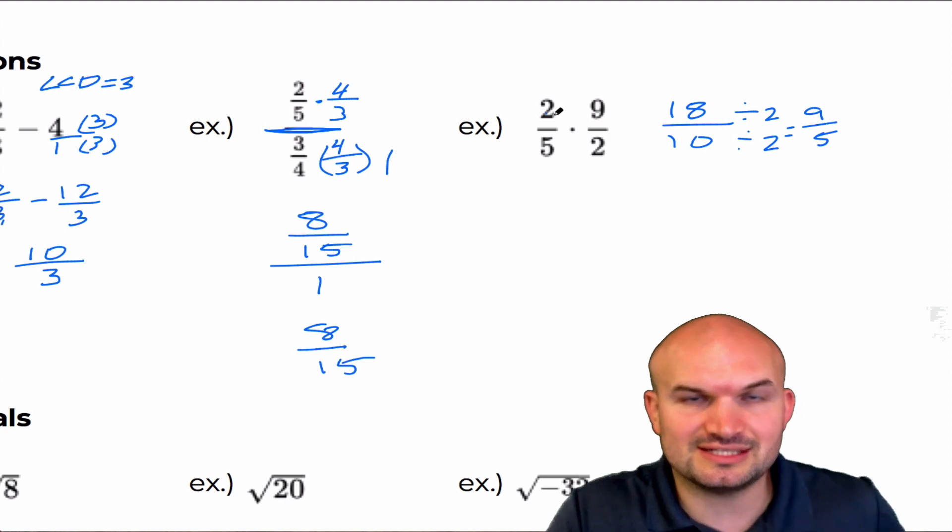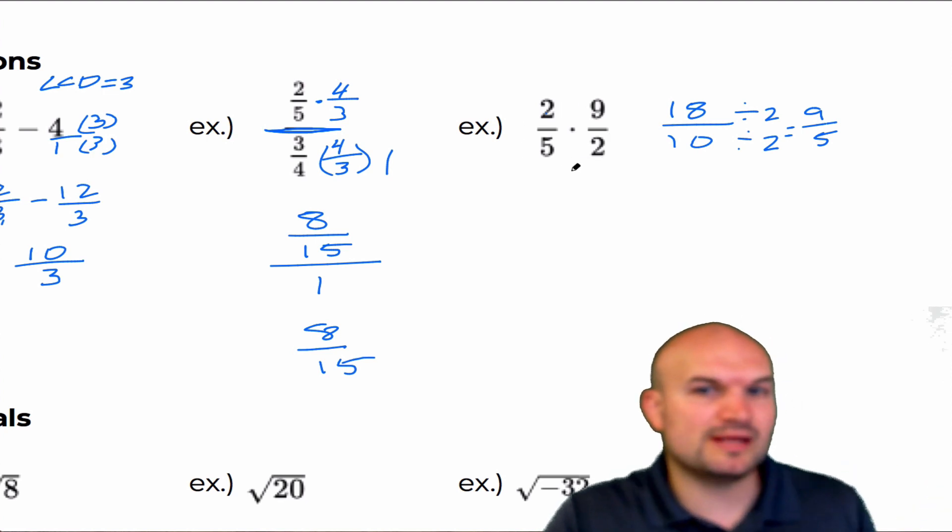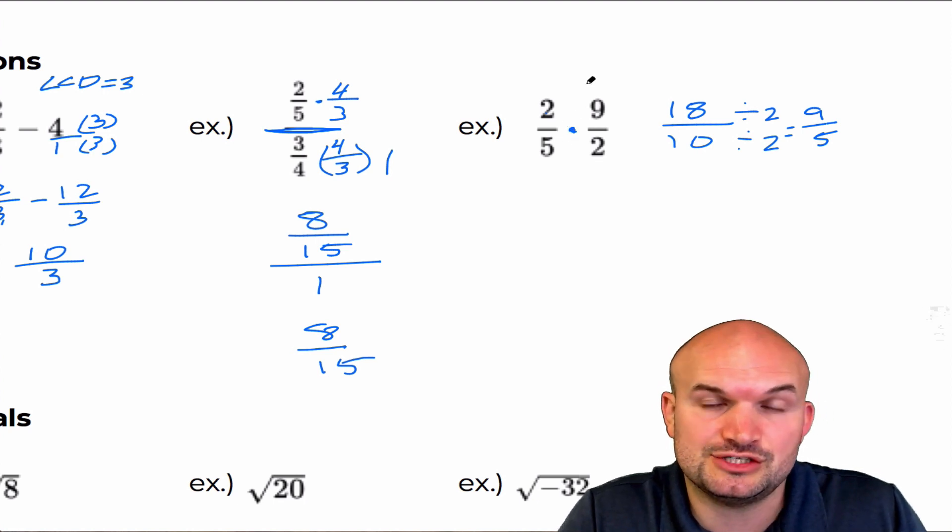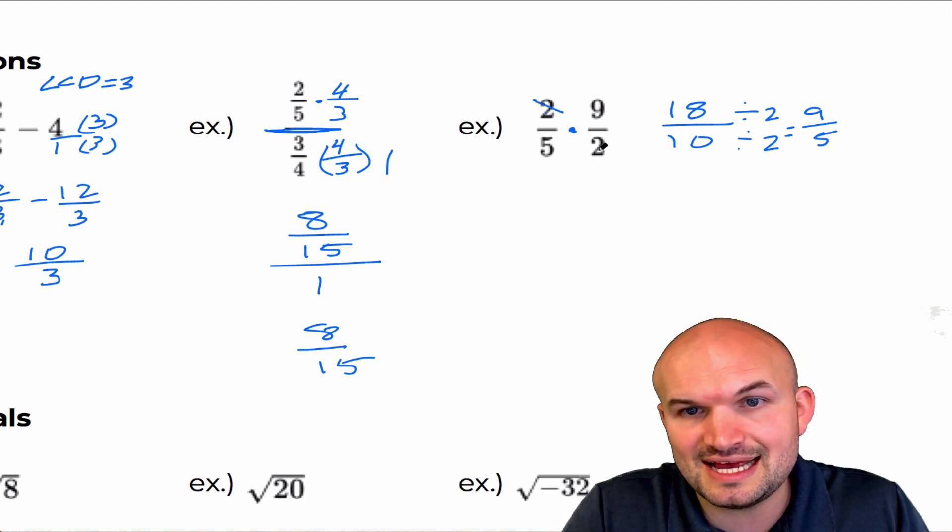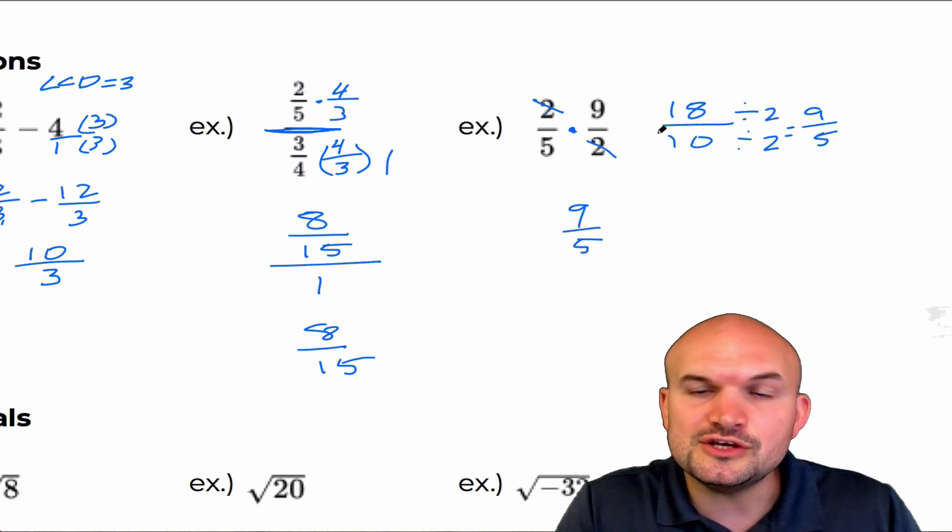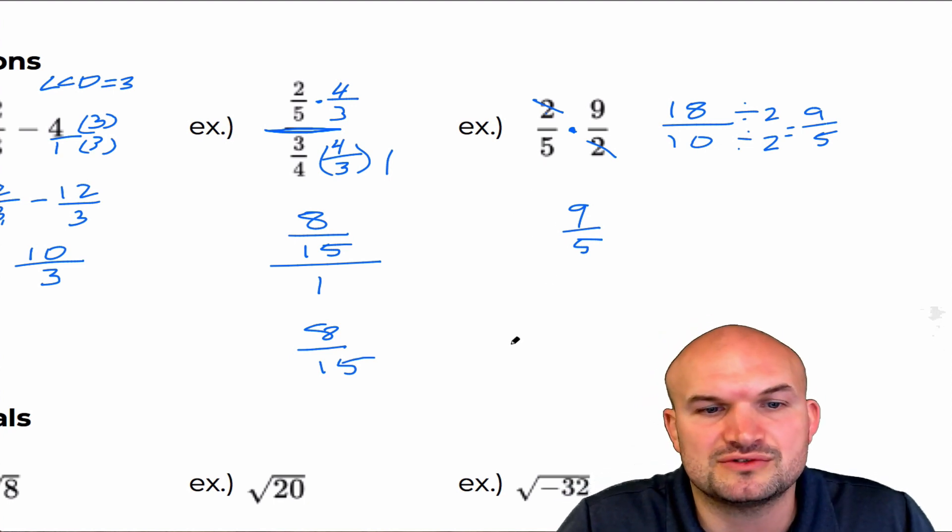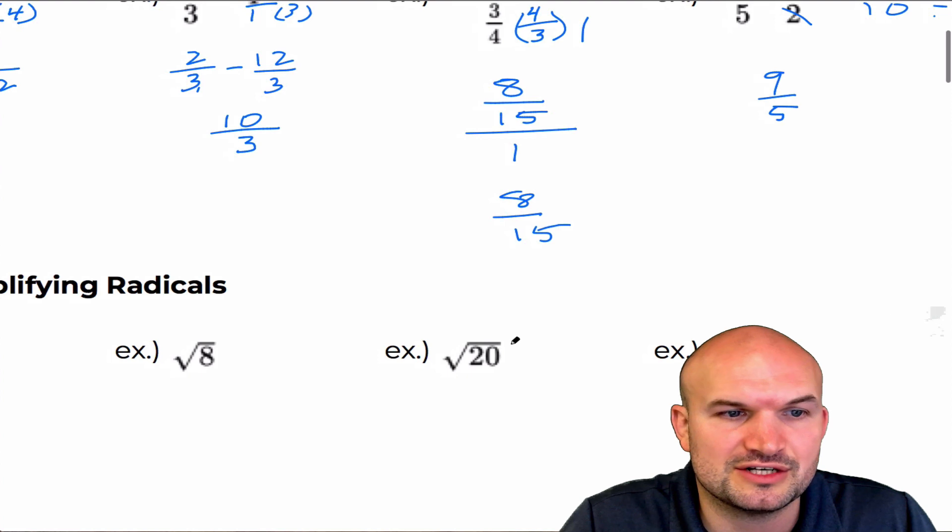Well, another way to look at this is simplifying fractions before we apply our operations. And what you notice is, since these fractions are separated by multiplication, I can take two divided by two and divide that out. And therefore I'm just left with nine fifths. So you can go through the process, but always look to be simplifying your fractions first.